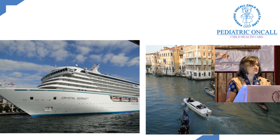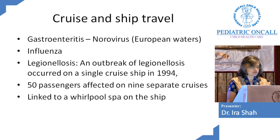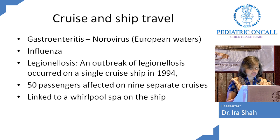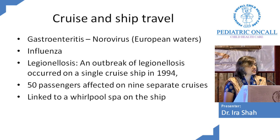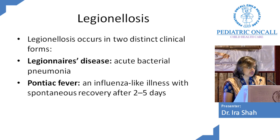We like to go on cruises — Venice, Mediterranean cruises — and we don't think about what infections we'll land up with. If you're on a cruise, the most common thing is gastroenteritis, especially norovirus in European waters. We could also land up with influenza. Don't forget Legionella — any child who comes with a URTI could be harboring Legionella from a cruise. Legionella can present as acute bacterial pneumonia or as Pontiac fever, an influenza-like illness with spontaneous recovery in two to five days.